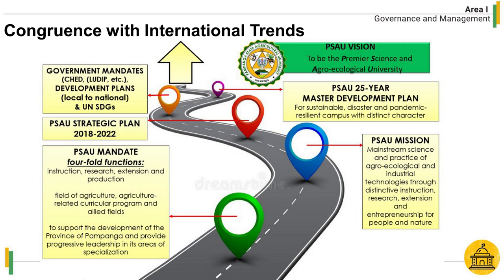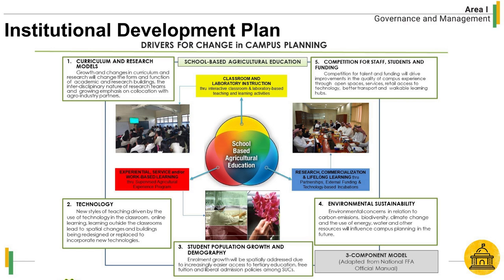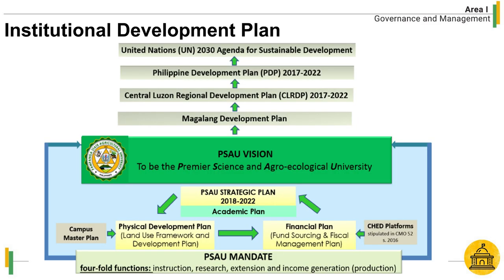The roadmap, as shown in Figure 4, will lead PSAU to its vision to be a premier science and agro-ecological university. To realize this vision, three components were aligned to work hand-in-hand with PSAU's five-year strategic plan, along with its academic plan. A clear physical development plan is essential in the operationalization. The campus master plan serves as a guide for current and proposed developments and a basis in drafting the financial plan, including fund sourcing and fiscal management.